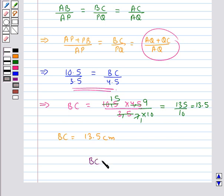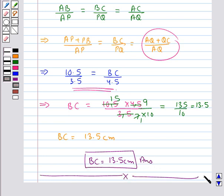Hence our final answer is BC equal to 13.5 centimeters. So this completes the session. Hope you have understood the solution for this question.